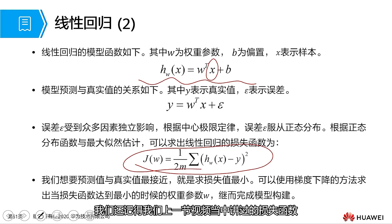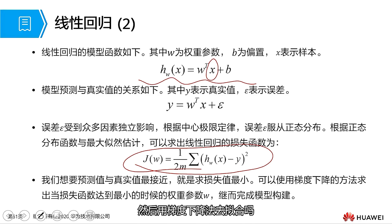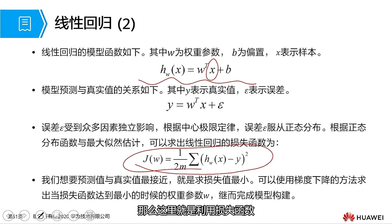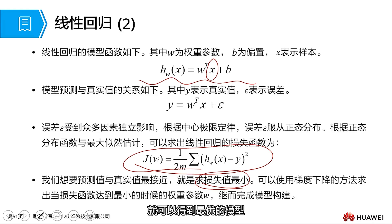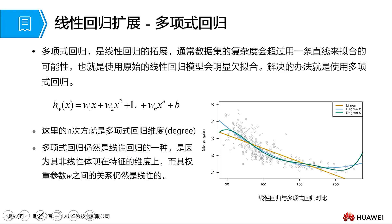How do we obtain such a linear regression model? We use a loss function. We still remember the loss function we talked about in our last video — the stochastic gradient descent used for fitting. Here is where this loss function is utilized. By minimizing its loss function value, we can obtain our best linear regression model. As long as the loss value is minimized, you can get the best model.